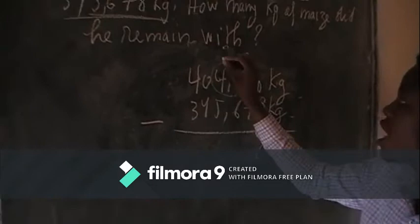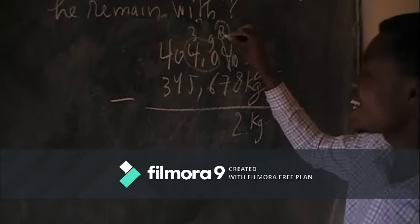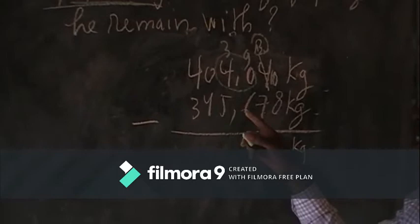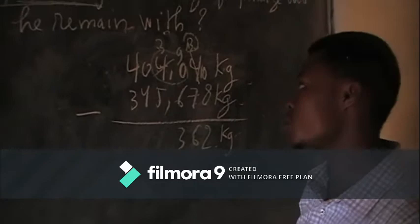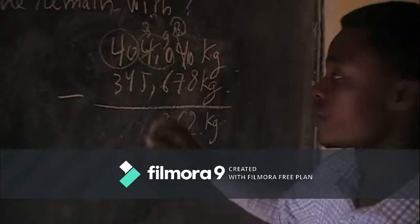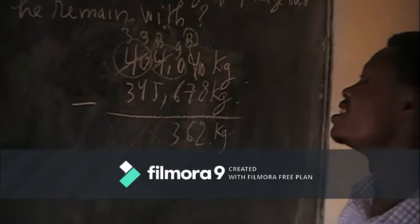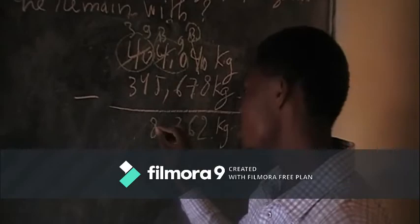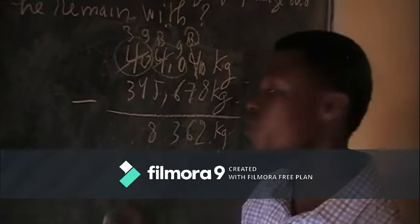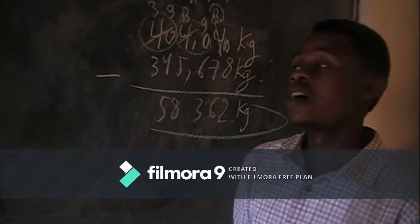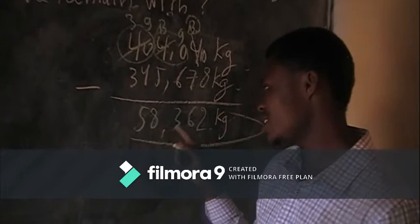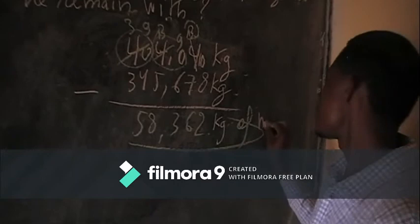Then 9 minus 6 is equal to 3. Here it means 4 becomes 3; 3 minus 5 is impossible, so we borrow again — it becomes 39, and here becomes 13. 13 minus 5 is equal to 8. Then 9 minus 4 is equal to 5. Then 3 minus 3 is equal to 0. So this farmer remained with 138,362 kilograms of maize.